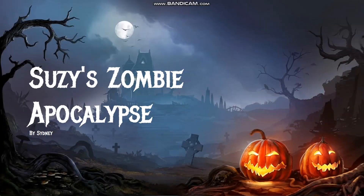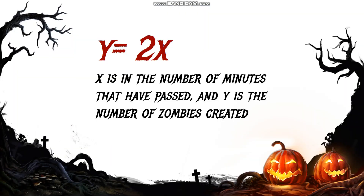Today we will be reading about a girl named Susie during the zombie apocalypse. Keep in mind that in this world, two zombies are born every two minutes. This can be represented by the equation y equals 2x, where x is the number of minutes that have passed and y is the number of zombies created.